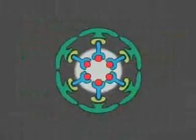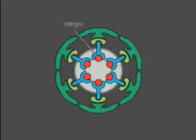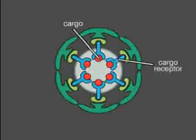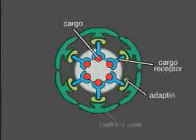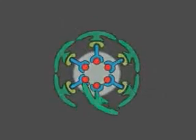The process involves a variety of molecules, including the cargo molecules that the cell takes in, the receptors that capture the cargo molecules, and molecules called adaptins that mediate contact between the receptors and the clathrin molecules that act to shape the vesicle forming at the plasma membrane.